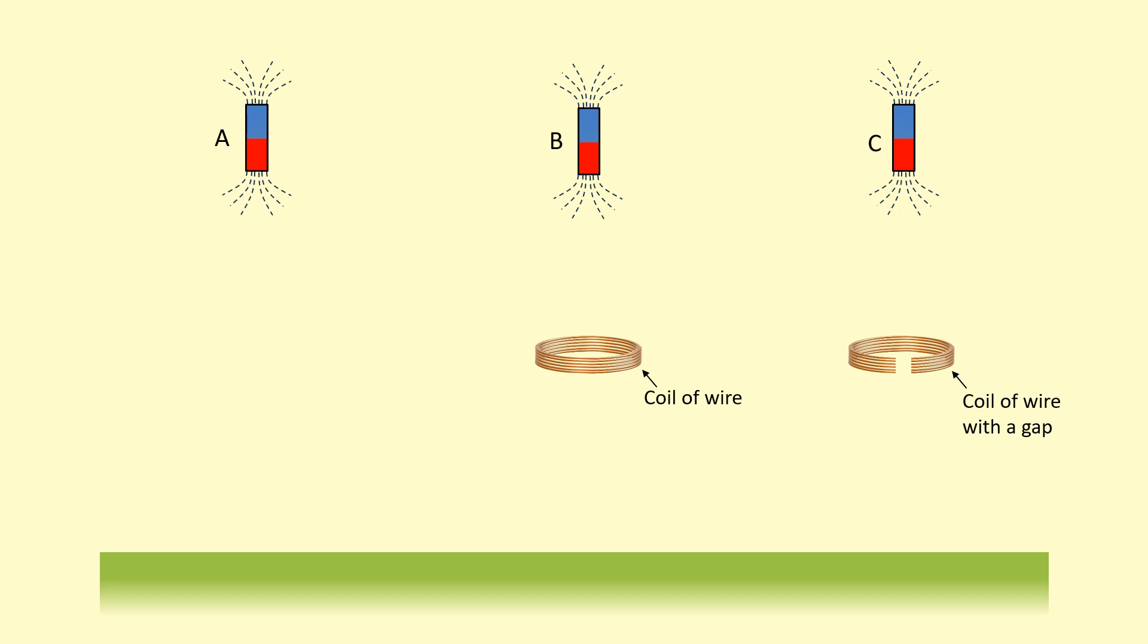We saw that when we release these magnets, B hits the ground later because it induces a current inside the coil and that causes a force which causes it to accelerate less. While C, because the current couldn't flow, it didn't experience force so it hits the ground at the same time as A.